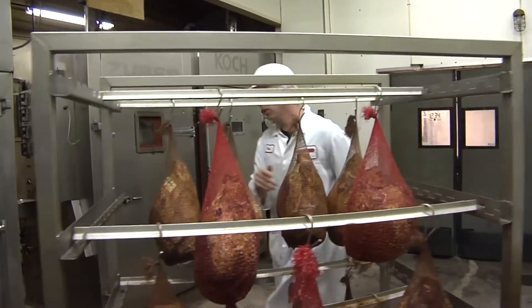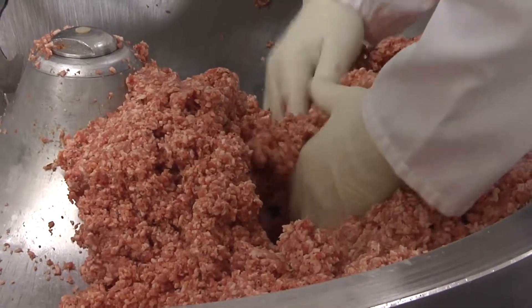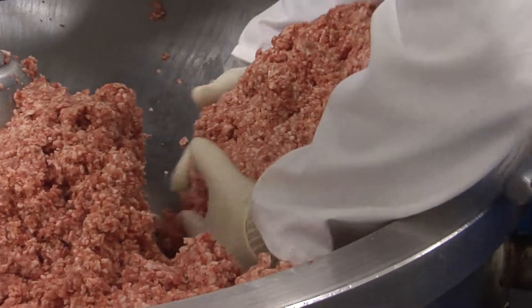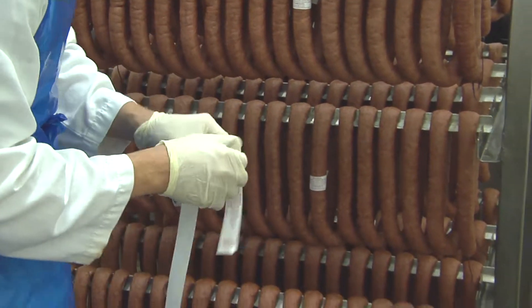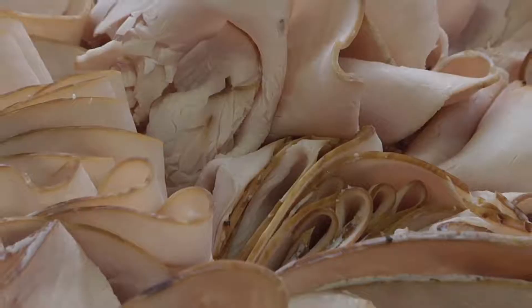A critical part of producing safe food is ensuring that the plant environment is maintained in a way that will not contribute microbiological contamination to the finished product.